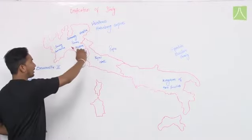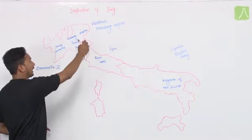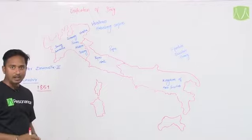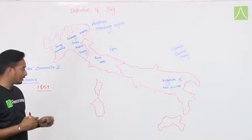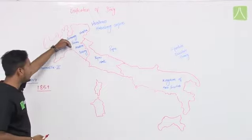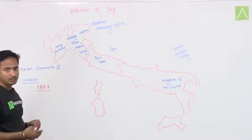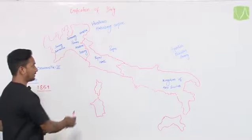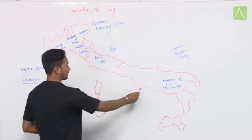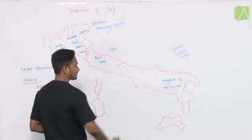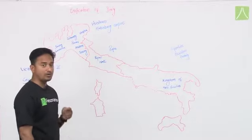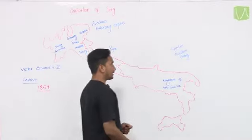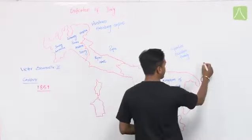Finally, Cavour drove out the Austrian Habsburg Empire from the northern part of Italy. This part of Italy was now completely free, and Victor Emmanuel II annexed this part to Sardinia. Next, for the southern states, another hero is introduced — Giuseppe Garibaldi.